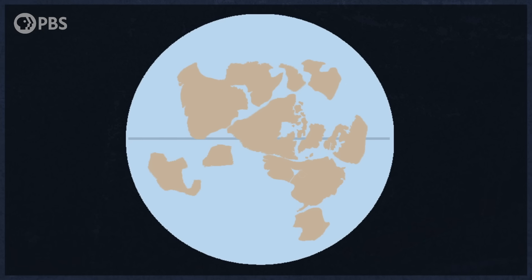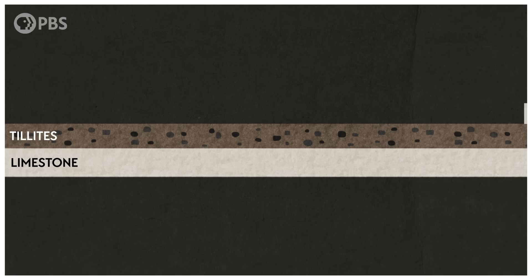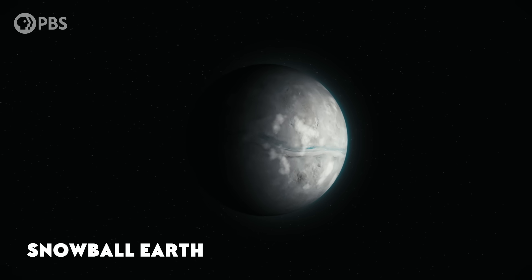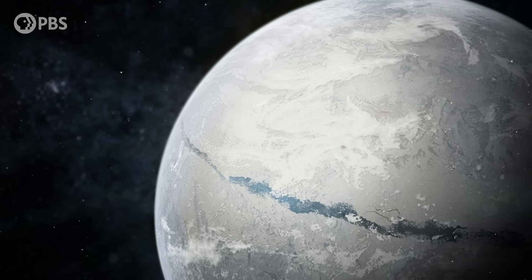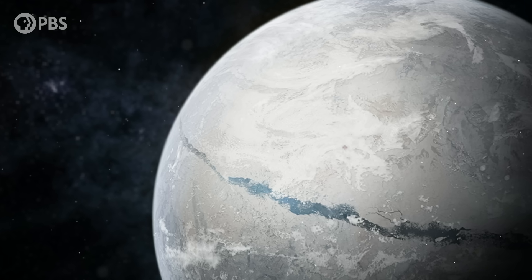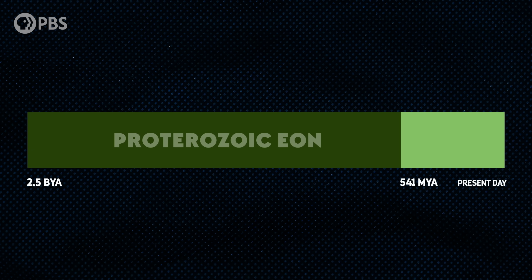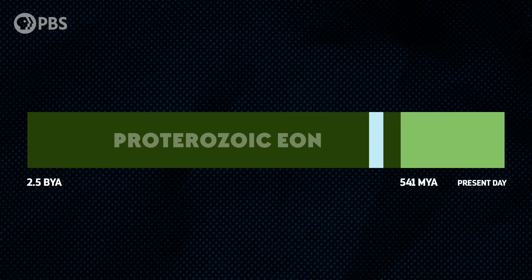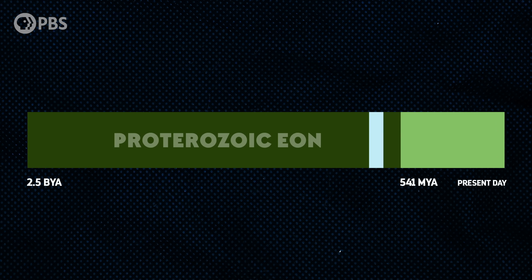In places that were at low latitudes during the late Proterozoic, geologists often find these tillites sandwiched between limestone beds that probably developed in warm, tropical waters. This finding, along with paleomagnetic data and other clues, gave rise to the snowball Earth hypothesis. According to this idea, glaciers once covered all or most of the world's surface, from the poles all the way down to the equator. This may have happened more than once, with the first episode starting around 716 million years ago and the last one ending just 635 million years ago.